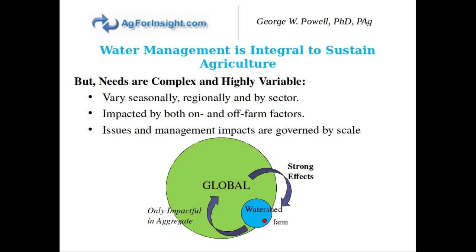Water is integral to sustaining agriculture, but the needs are really complex and highly variable. They vary seasonally — your water needs at the beginning of the year are not necessarily the same as during peak crop production. They vary regionally because of climatic differences and by sector, so the water needs of a market gardener are not the same as a livestock producer or an extensive crop producer. Most importantly, water needs and water supplies are impacted by both on and off-farm factors, so inflows and outflows can be influenced strongly by what's happening regionally and globally.